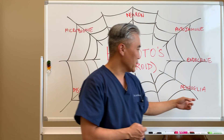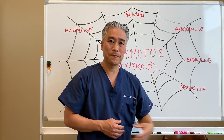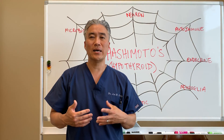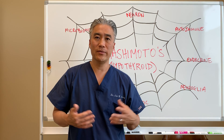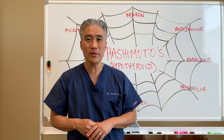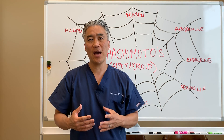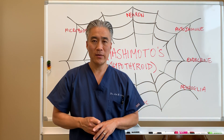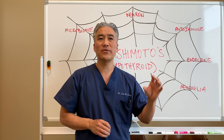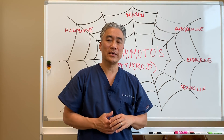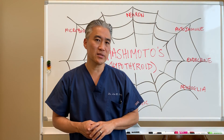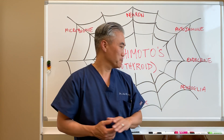Another one is neuroglia. Hashimoto's affects the neuroglia of the brain and can create inflammation in the brain. It can create activation of microglia, or it can create an immune response in the brain.